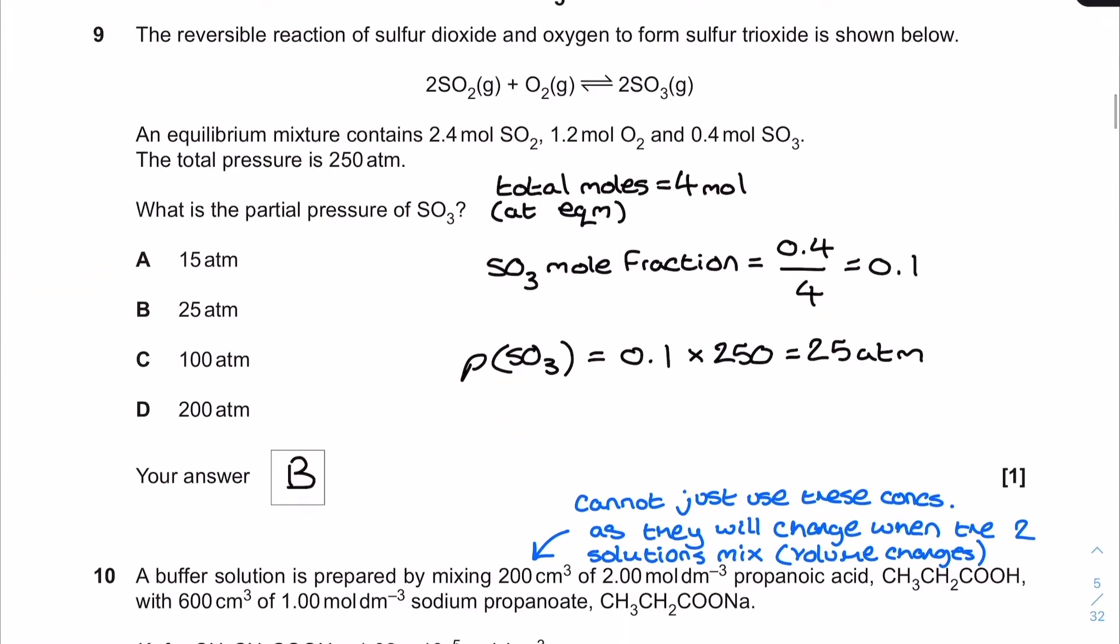Question 9. The reversible reaction of sulfur dioxide and oxygen to form sulfur trioxide is shown. An equilibrium mixture contains all these moles of the different components and the total pressure is 250 atmospheres. What's the partial pressure of SO3? To find partial pressure I need mole fraction times total pressure. I find the mole fraction by figuring out the total moles at equilibrium, which is 4. The mole of SO3 is 0.4 over 4, giving a mole fraction of 0.1. Mole fraction times total pressure gives 25 atmospheres, the correct answer B.